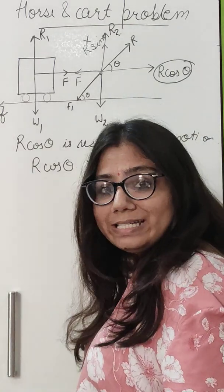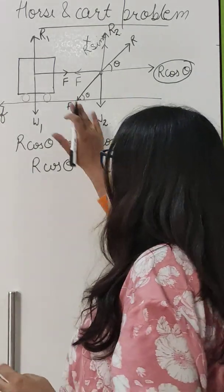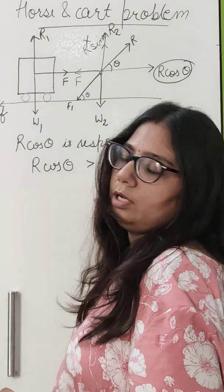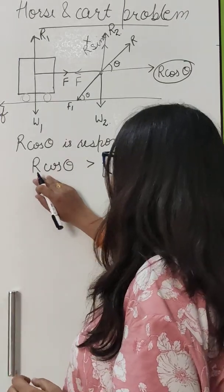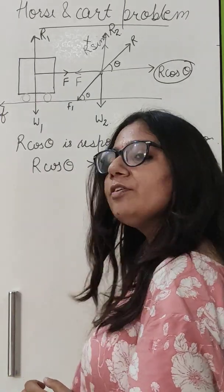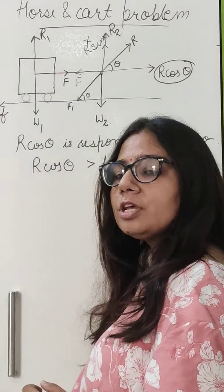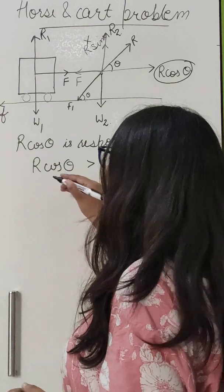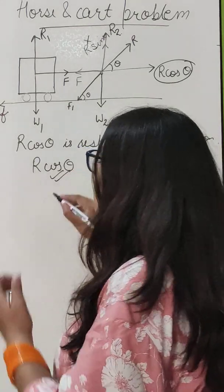If the frictional force is greater, then motion cannot be possible. But if the component R cos theta is greater than the frictional force, we can see that motion is possible.